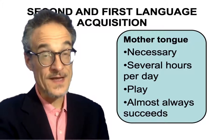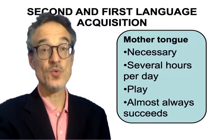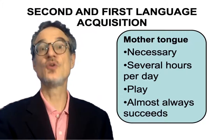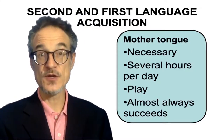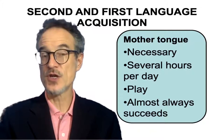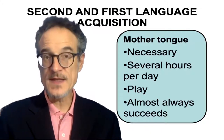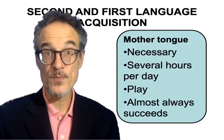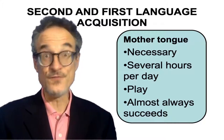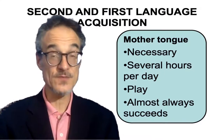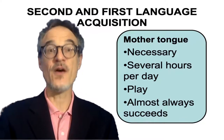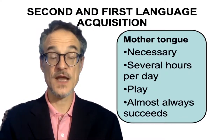And almost always, first language acquisition is successful. Almost 100% of people can speak their first language — and not only can they speak it, they can speak it very well. They can understand their first language, they can usually read in it, they can often write in it. So often people become very, very good at their first language.